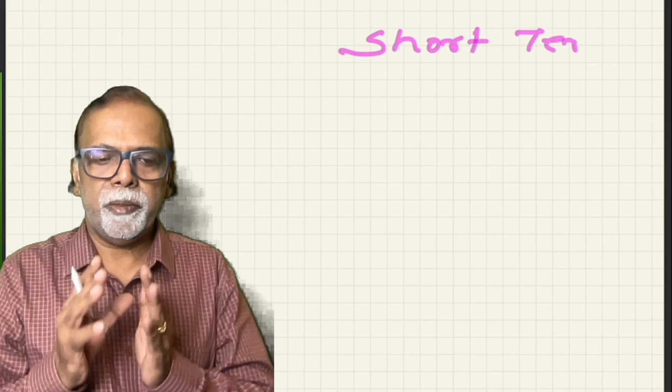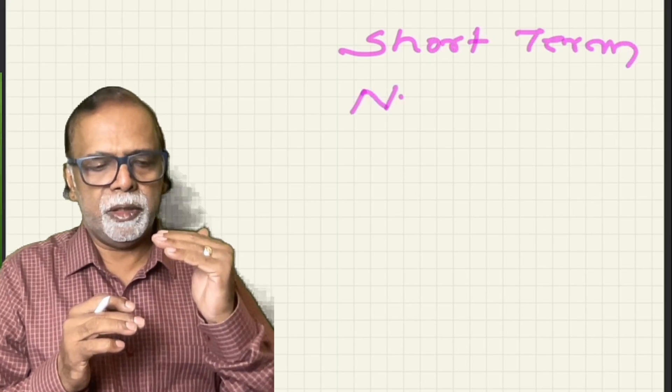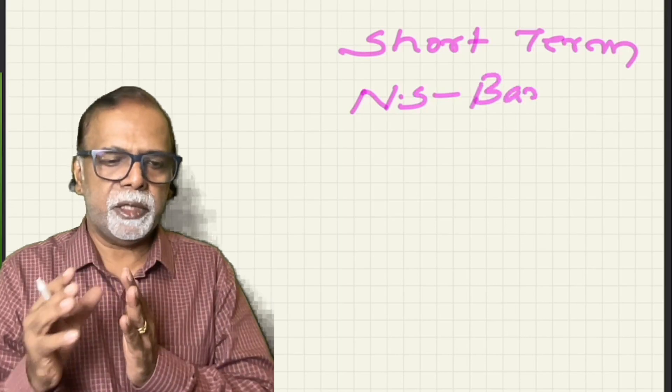First we look into the short term regulation. Nervous mechanisms come at the top. The nervous mechanisms are the baroreceptor response, the CNS ischemic response, and the chemoreceptors.